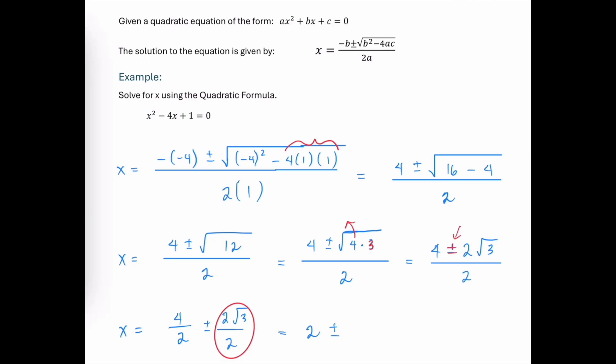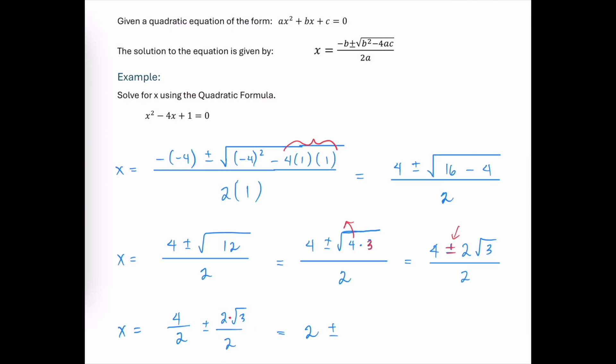We still have our plus minus. And we are able to cancel these 2s now because we're canceling over multiply. So the 2s would cancel and we'd be left with just square root 3. So 2 plus rad 3 and 2 minus rad 3 are the two solutions to this quadratic equation.